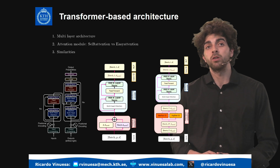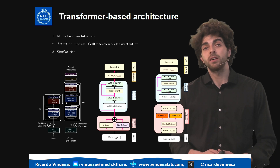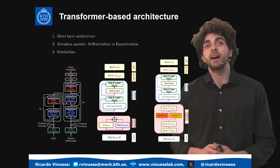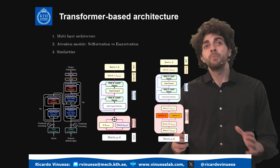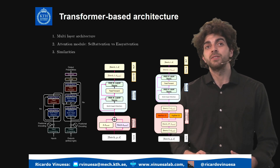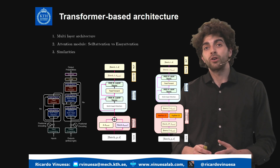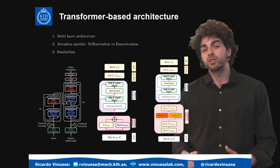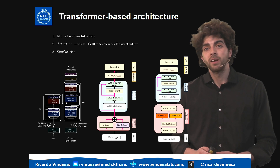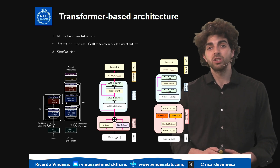The encoder is the left block and is delimited by the input embedding, and the decoder is the right block delimited by the output embedding. From a model perspective both blocks are pretty similar, however the data that is fed into them is completely different. In order to understand better the intrinsics of this model, we will focus only on the encoder block, shown in the second and third images.